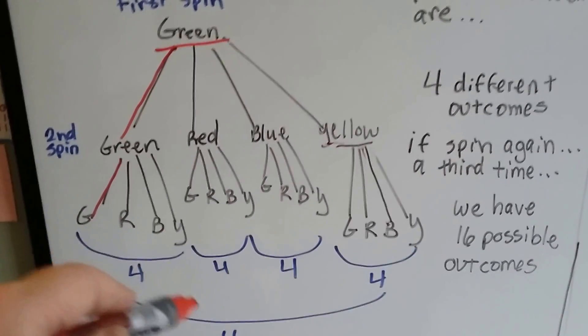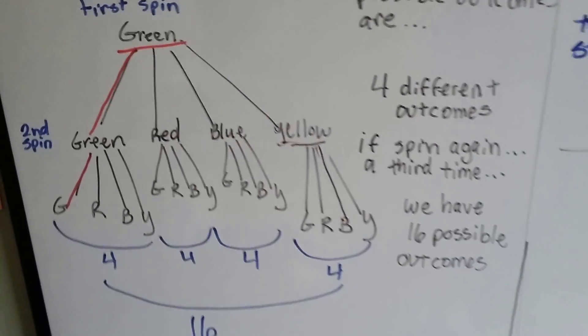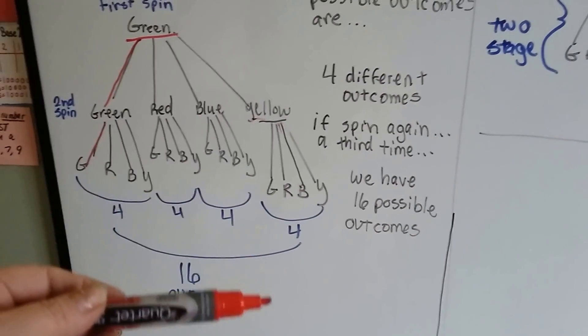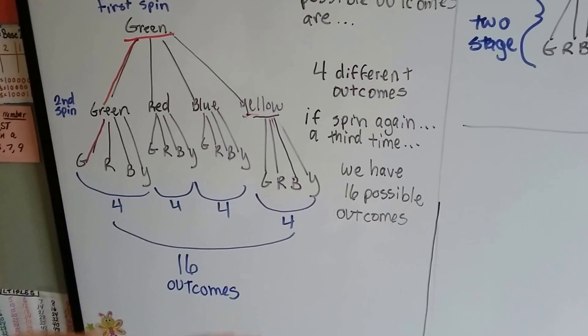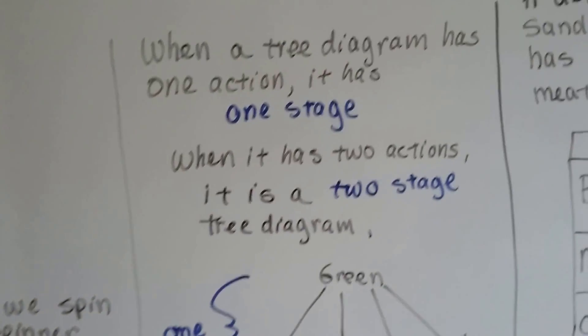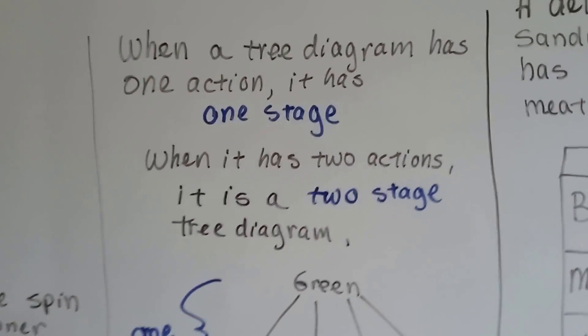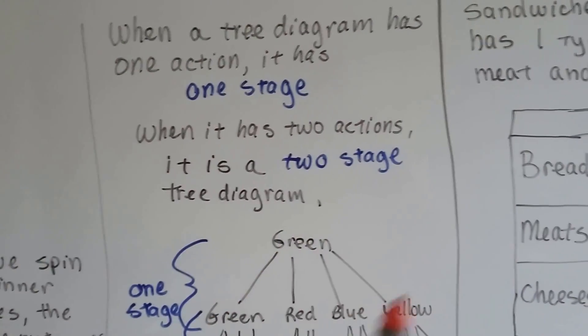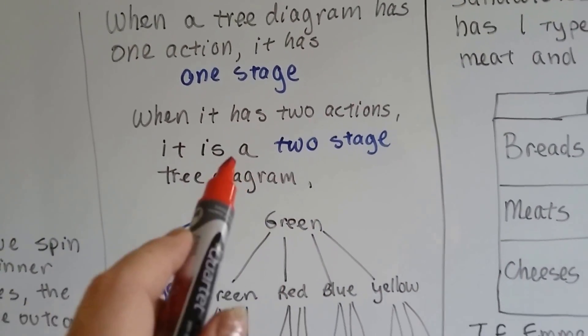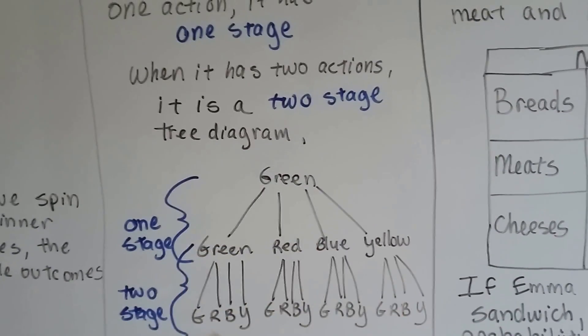So that's a tree diagram. It shows all the possibilities coming down, see? And each time it has more branches, it squares, alright? So when a tree diagram has one action, it's got one stage. This is one stage. When it has two actions, it's called two stages, see?